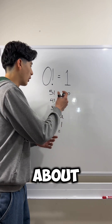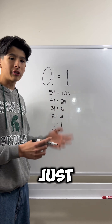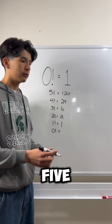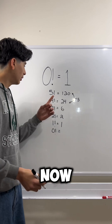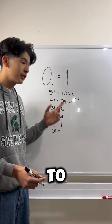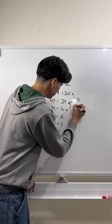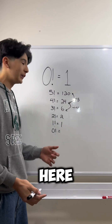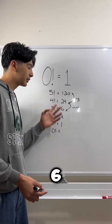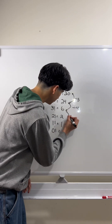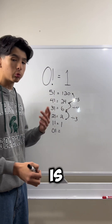What do we notice about this? From 120 to 24, you just have to divide 120 by 5. What do we have to do to 24 to get it to 6? We just divide it by 4. Are you noticing a pattern? We could just apply this for all the other ones. So, 6 divided by 3 is 2. 2 divided by 2 is 1.